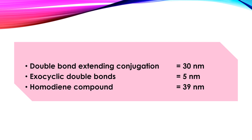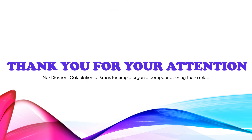The rules for identifying exocyclic double bonds, extended conjugation, and homoannular units are the same for the 1,3-butadiene system as well as for the alpha-beta unsaturated system. Thank you for your patient listening. In our next session, we will try to calculate lambda max for simple organic compounds using these rules. Thank you. Have a nice time.